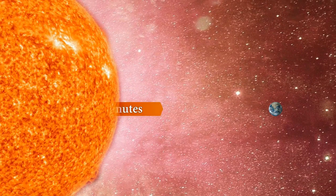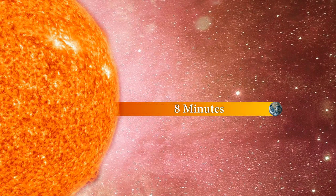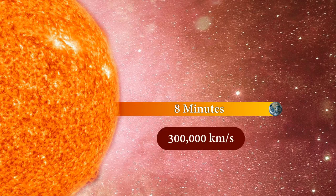It takes about 8 minutes for light to travel from the sun to the earth. That is about 300,000 kilometers per second.